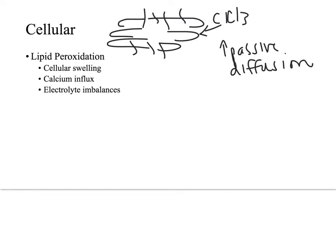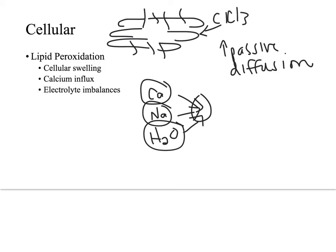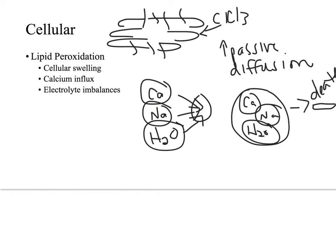With increased passive diffusion, things are going to get into the cells. Some of the things that might get into the cells are calcium, sodium, and water. All these things are moving into the cell. That causes the cell to get big, because now we have this cell that's got calcium, sodium, and water inside of it. Over time, the cell can burst and the cell will die. That's one way that this free radical can cause death in the cell.